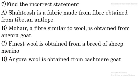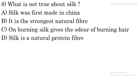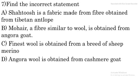Find the incorrect statement. Shahtoosh is a fabric made from fiber obtained from the Tibetan antelope — this is true and this fabric is banned by the government. Mohair is a fiber similar to wool and is obtained from the Angora goat — this is also true, because Mohair fiber is similar to wool and is found from the Angora goat.